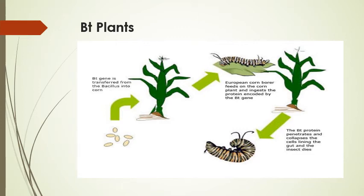In this slide you can see how BT plants or pest-resistant plants act on the pest. On the left-hand side there are BT genes transferred from the bacteria Bacillus thuringiensis into a corn plant. Now when this corn plant is pest-resistant, if any pest such as the European corn borer comes and feeds on the plant and ingests the protein encoded by the BT genes, it will perforate the epithelial lining or midgut of that insect. The BT protein penetrates and destroys the cells lining the gut and the insect dies.